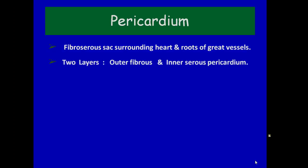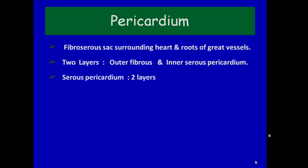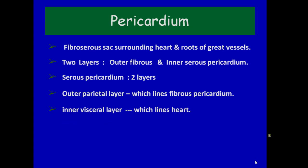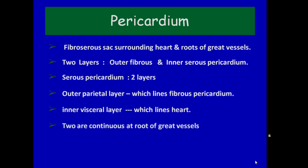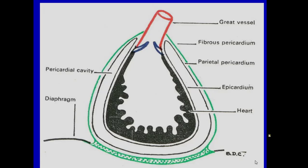Pericardium is a sac surrounding the heart and roots of great vessels. It is composed of two layers: the outer layer is fibrous pericardium and the inner layer is serous pericardium. Serous pericardium has two layers — the outer parietal layer, which lines the fibrous pericardium, and the inner visceral layer, which lines the heart. The two layers are continuous with each other around the roots of great vessels, thus enclosing the pericardial cavity, which is filled with a small amount of fluid that acts as a lubricant.